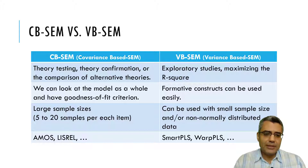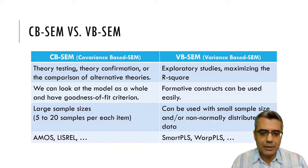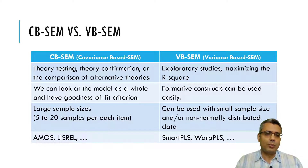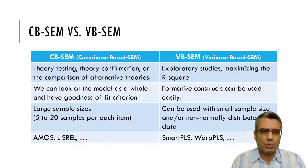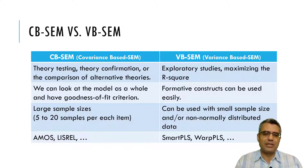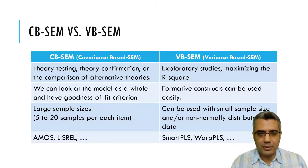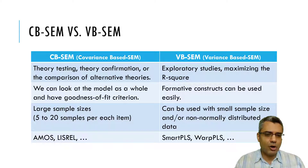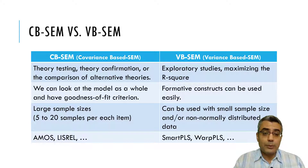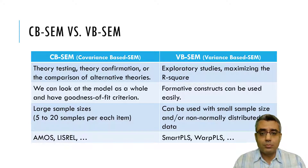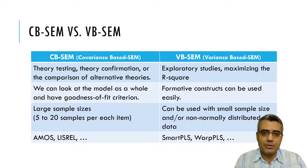Another point is about sample size. When you want to use CBSEM, you need a large sample size. A rule of thumb mentioned is 5 to 20 samples per each item. Generally, CBSEM requires a large sample size, but PLSSEM can be used when you have a small sample size too.